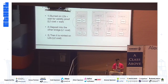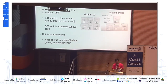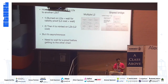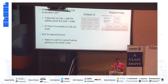So how do we improve on this? The next architecture is to use a shared bridge. The general idea is that users are able to bridge directly between two L2s. First it gets burnt on L2A, same as before. You wait for the validity proof and it will be minted directly on L2B. But this is asynchronous — you need to wait for the proof on L2A to be submitted first before the token can be minted on L2B.